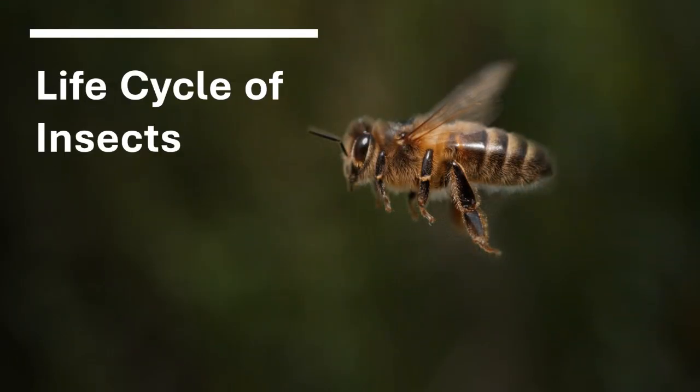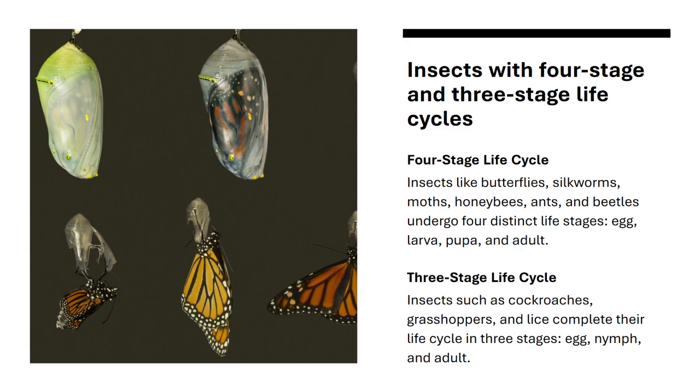Insects have either four-stage or three-stage life cycles. We'll give an overview of these cycles, focusing especially on the butterfly stages and adult form. Some insects like butterflies, silkworms, moths, honeybees, ants, and beetles go through four stages.